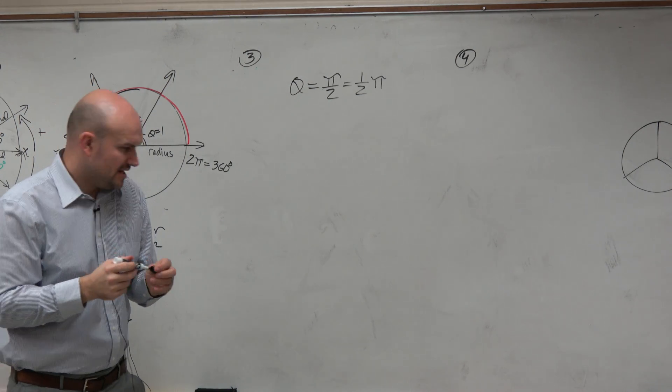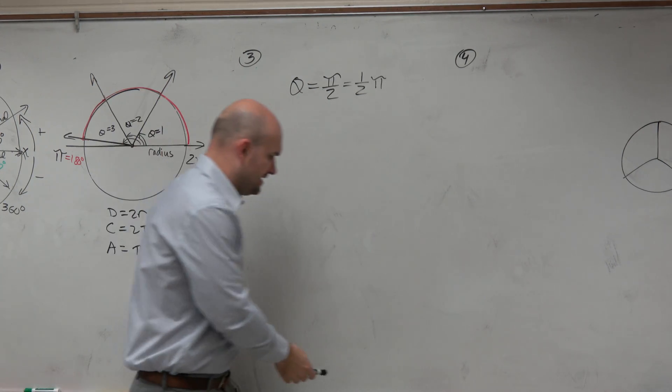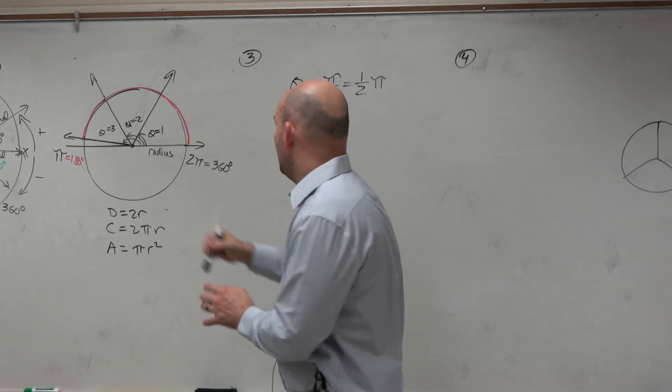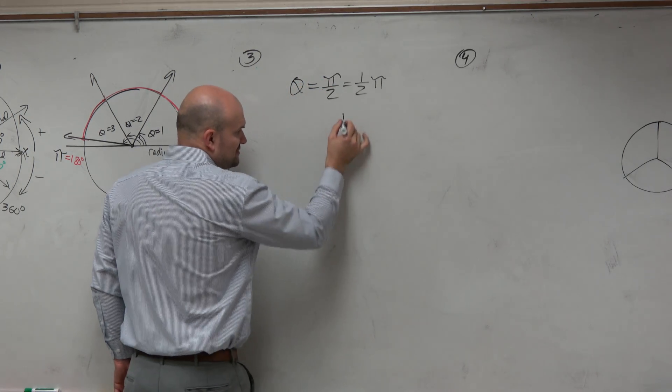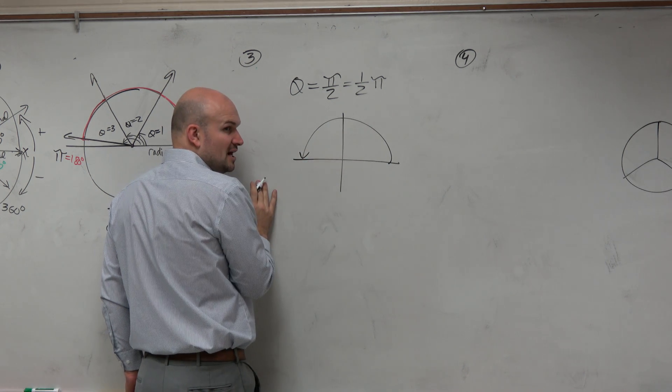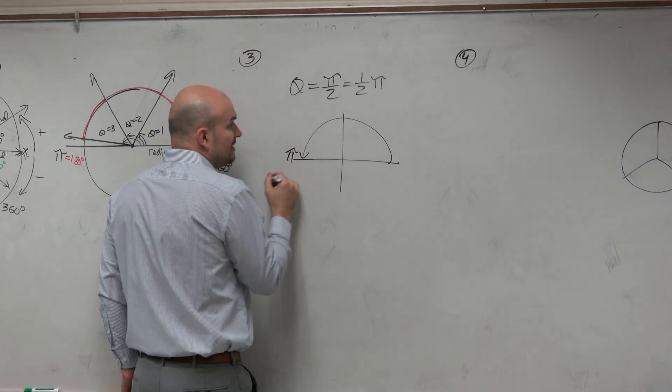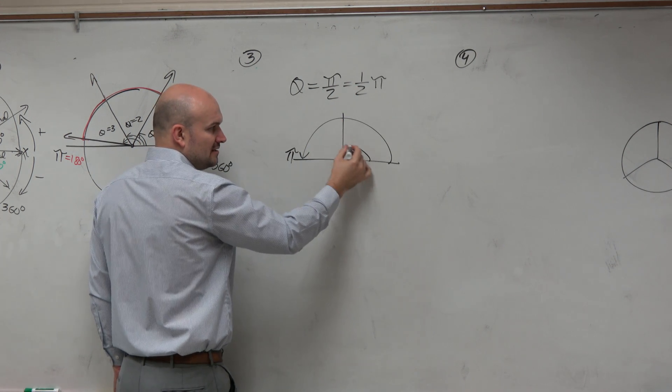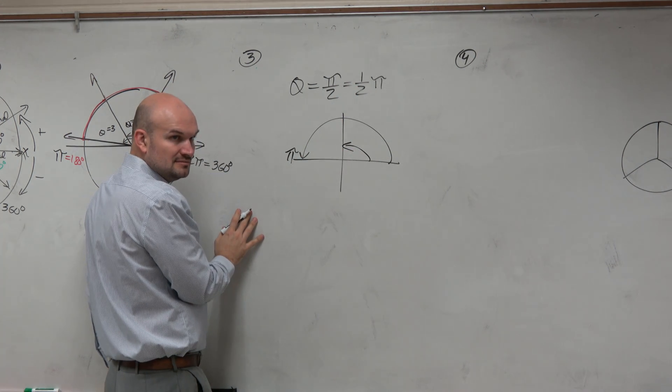Right? So then we think to ourselves, well, do we know what the pi is in our radian form? And we say, well, if we have a circle from here to here represents a distance of pi. So if I'm just looking for one half of that, that's going to be from there to there. Right?